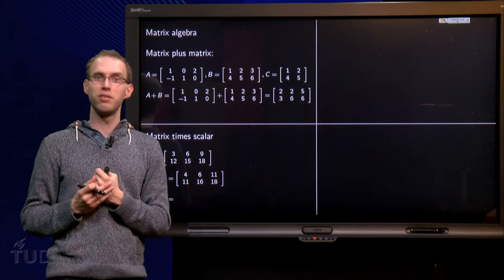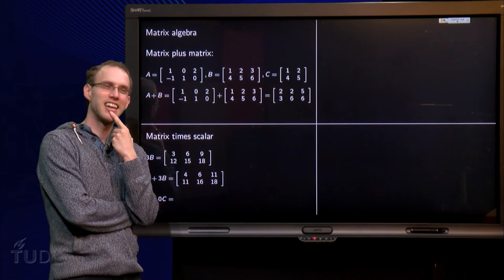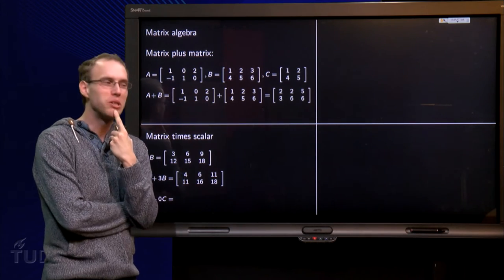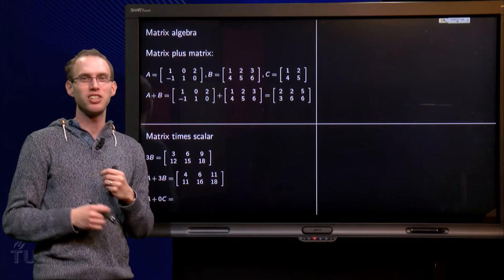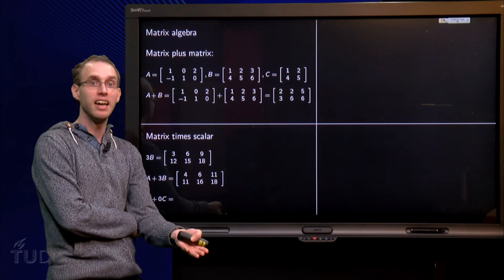And there you have A plus 3 times B. Could you make a mistake in exercises like this? Well, in fact you can. Here we have A plus 0 times C. And that's a nasty one. I see you think, why? It's just A.